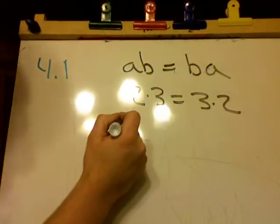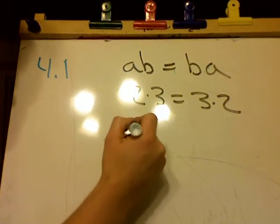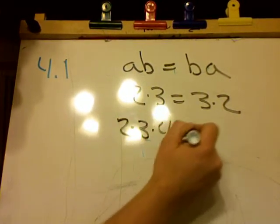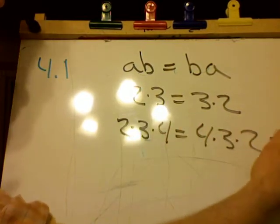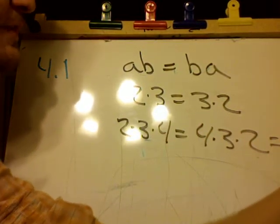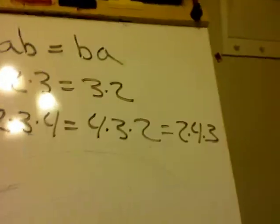Kind of hard to see. Or you can throw other things in there. So 2 times 3 times 4 would be the same as 4 times 3 times 2, or 2 times 4 times 3. I can't see that. Okay.